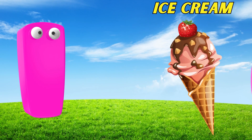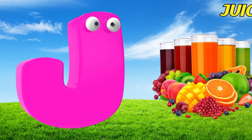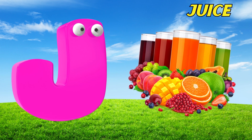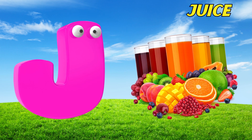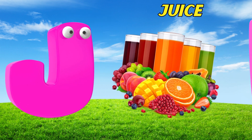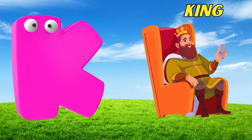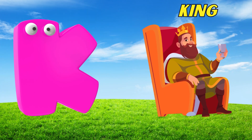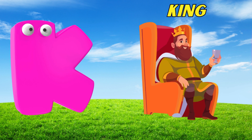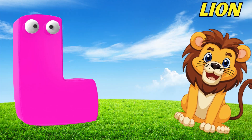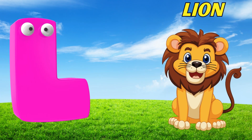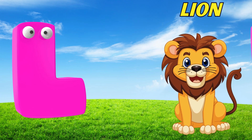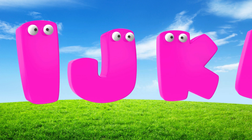I is for ice cream, i-i-ice cream. J is for juice, j-j-juice. K is for king, k-k-king. L is for lion, l-l-lion.